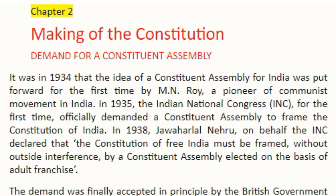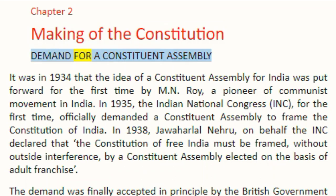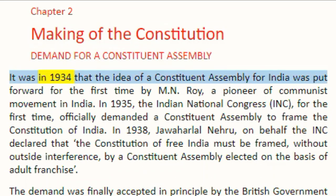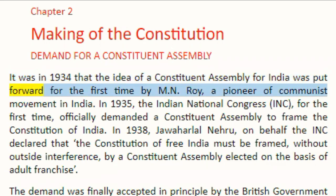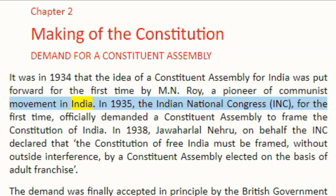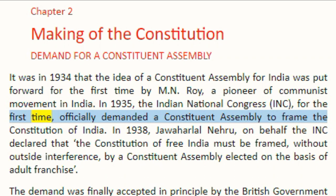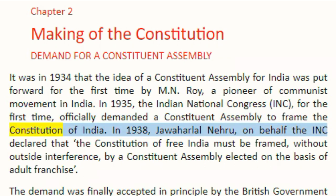Chapter 2: Making of the Constitution. Demand for a Constituent Assembly. It was in 1934 that the idea of a constituent assembly for India was put forward for the first time by M. N. Roy, a pioneer of the communist movement in India. In 1935, the Indian National Congress (INC), for the first time, officially demanded a constituent assembly to frame the constitution of India.